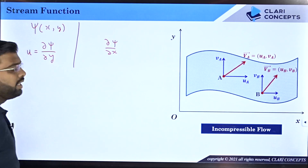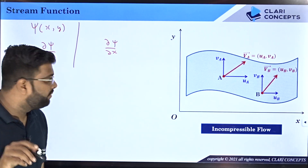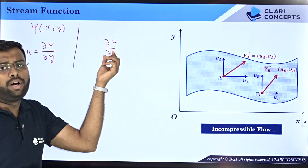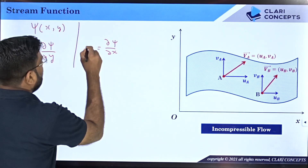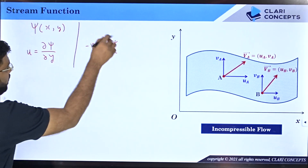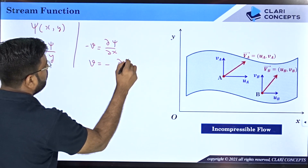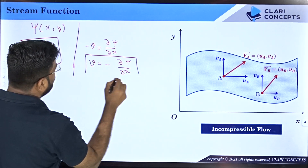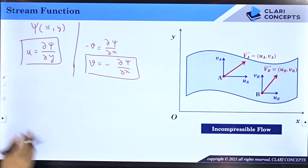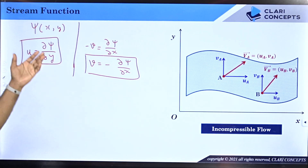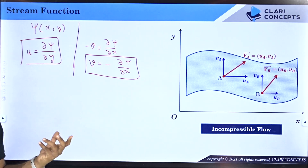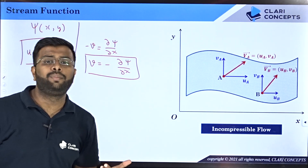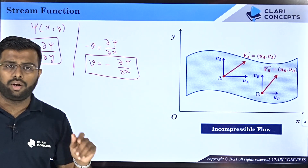Similarly, when you differentiate ψ with respect to x, you get the negative of the velocity component in the y direction. So v equals −∂ψ/∂x, and u equals ∂ψ/∂y. Rather than talking about u and v individually, if someone simply gives you the stream function ψ, you can easily determine both. Also, the stream function is constant along streamlines, so it represents streamlines in fluid flow.